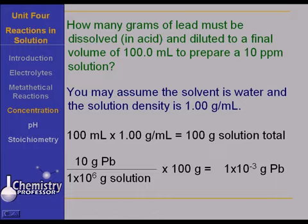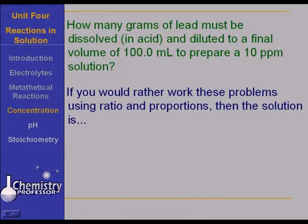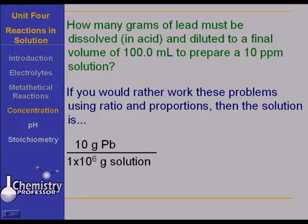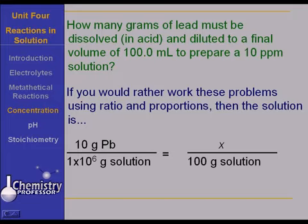Some students get a little confused when it's worked this way and would really rather work it by ratio and proportions. So if you want to work it by ratio and proportions, do it like this: 10 grams of lead is to a million parts of solution as X grams of lead is to 100 grams of solution. Do you like that better? Just don't foul up your algebra in solving it. And you will find that X, of course, comes out to be 1 times 10 to the negative 3rd grams of lead.